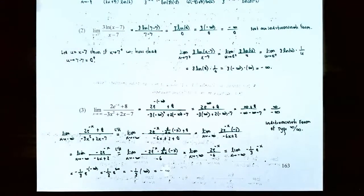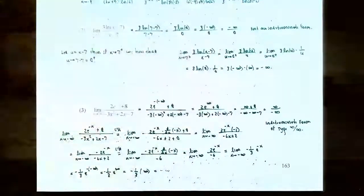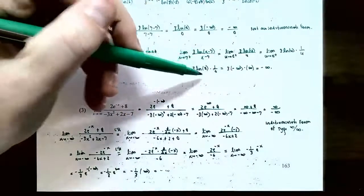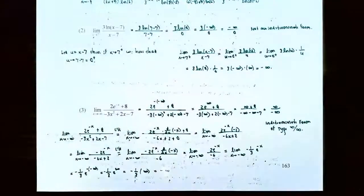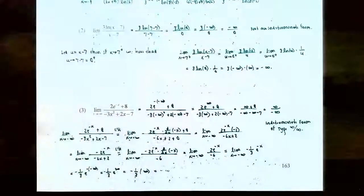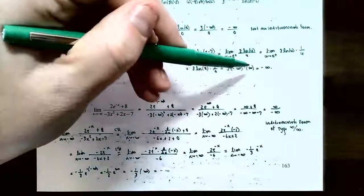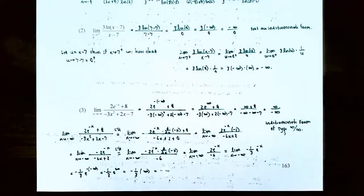So we have 3·ln(0) times 1/0. We know ln(0) approaches −∞, so the numerator is 3·(−∞) = −∞. For 1/u as u approaches 0 from the right: the function 1/u grows to +∞ as u approaches 0 from the right side of the vertical asymptote. So this becomes 3·(−∞)·(+∞) = −∞. The y-values grow arbitrarily more and more negative for this function as x approaches 7 from the right.